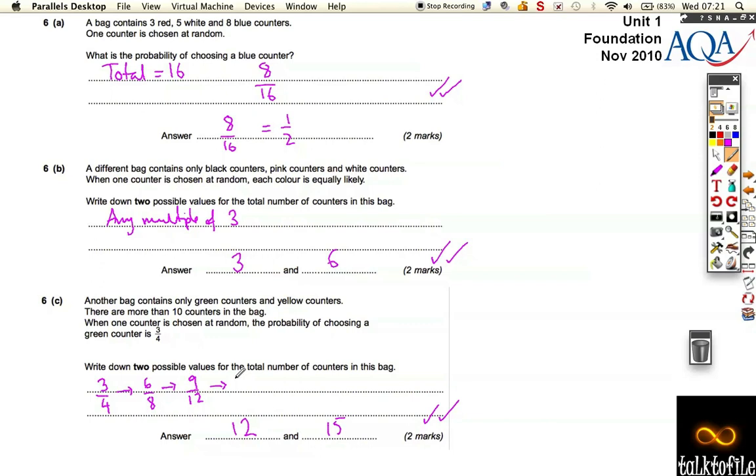It could be twelve out of, sorry, not twelve out of fifteen. Twelve out of sixteen. So it would have to be sixteen in the bag there.